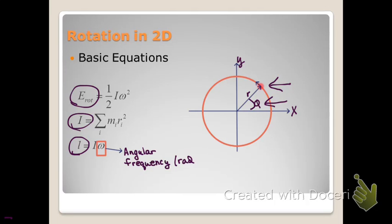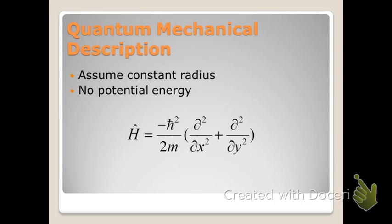In these equations, omega represents the angular frequency in radians per second, and as mentioned earlier, I is the moment of inertia.